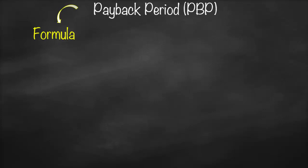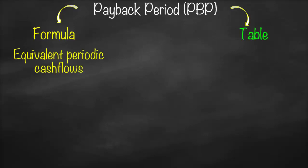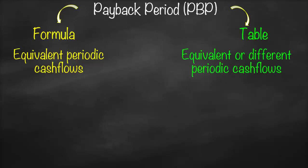In order to calculate payback period, we can use one of two ways: either a shortcut formula or a table. To use the formula, you must have one condition — you must receive equivalent periodic cash flow, meaning you receive the same number every period. If the numbers are different, you cannot use the formula and should use a table instead.